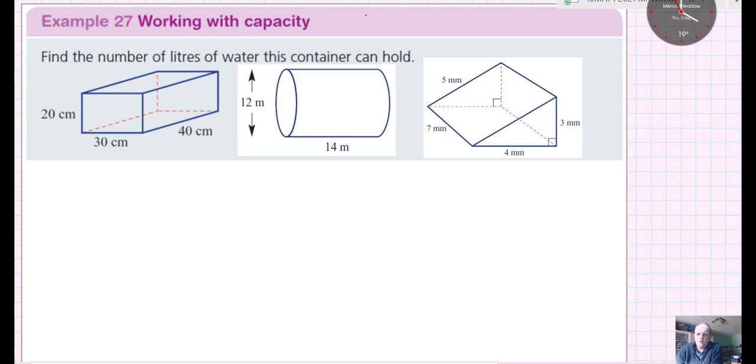The first issue is that in order to calculate capacity, the first thing you do is you need to find the volume of the shape. And then having found the volume, you can then change that into a measure of capacity.